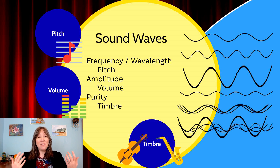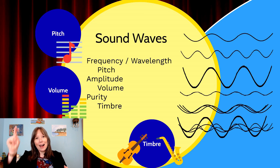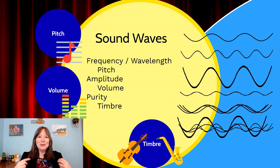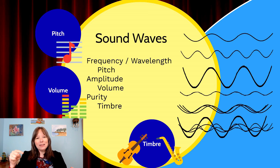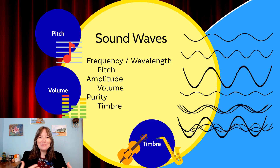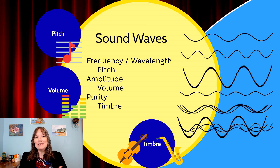Amplitude is expressed as volume or loudness. Something with a more exaggerated amplitude — high crests and low troughs — is going to be perceived as louder, while something with a smaller amplitude will be perceived as softer.